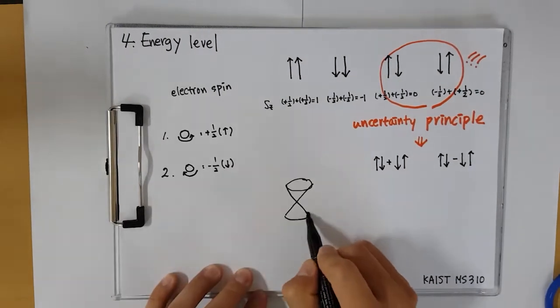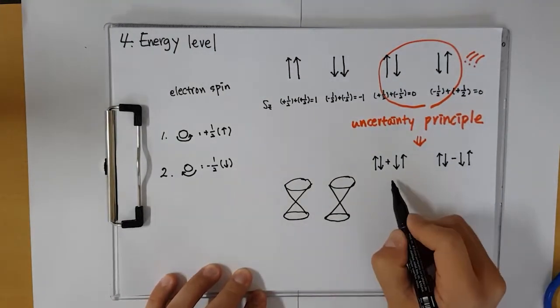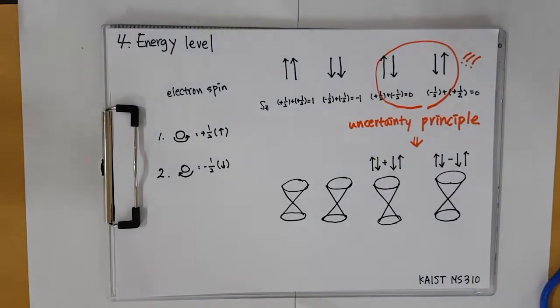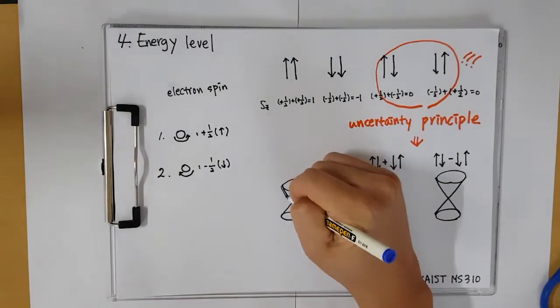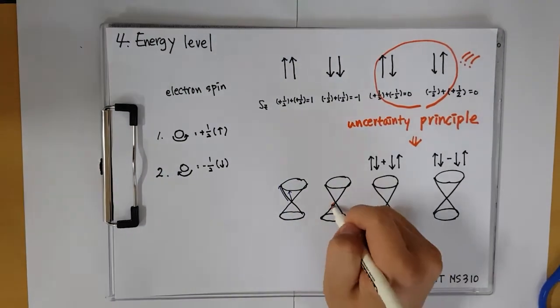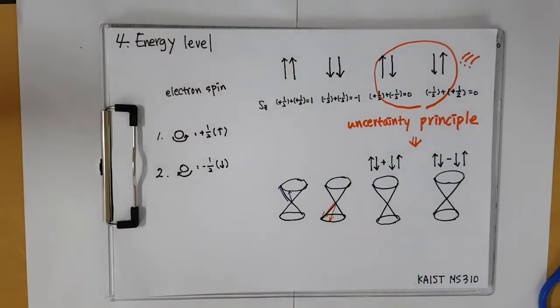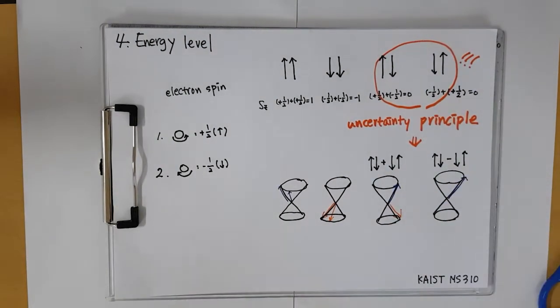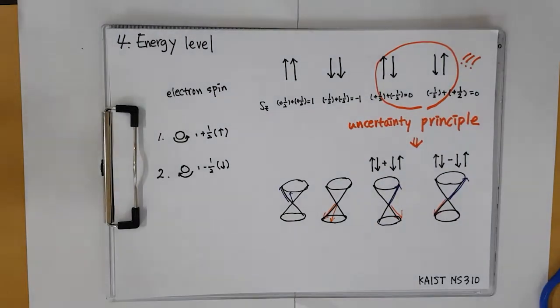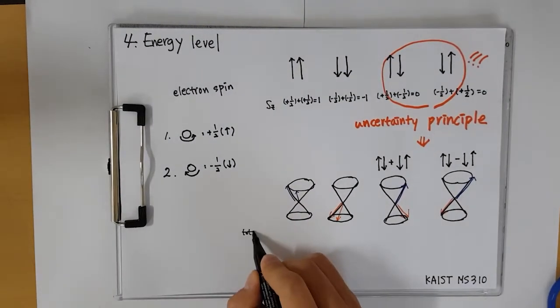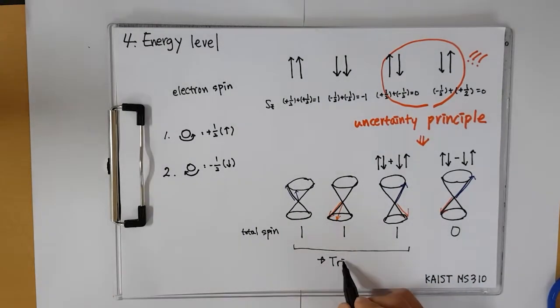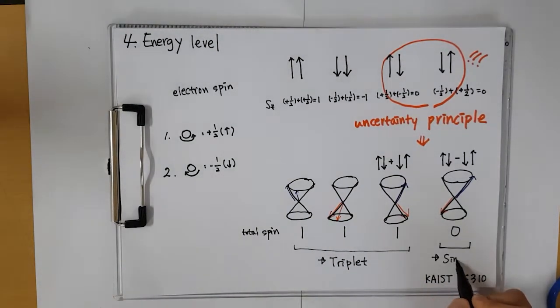Let's visualize the total spin of each case. In the parallel spin cases, we can draw like this, and total angular momentum is not zero. In the anti-parallel spin cases, there are different two states, which the total angular momentum is zero and is not zero. We call the case that has total angular momentum zero the singlet state, and we call the last cases the triplet states.